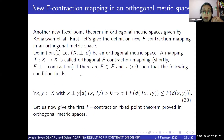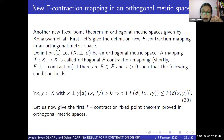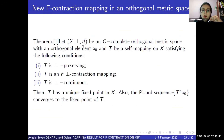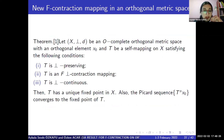Another new fixed-point theorem in orthogonal metric space is given by Konaklan et al. First, let's give the definition of the new F-contraction mapping in an orthogonal metric space. Let (X⊥, d) be an orthogonal metric space. A mapping T: X → X is called an orthogonal F-contraction mapping if there are F in ℱ and τ > 0 such that the following condition holds as in condition 30. Let (X⊥, d) be an O-complete orthogonal metric space with orthogonal element X₀ and T be a self-mapping on X satisfying conditions 1, 2, 3. Then T has a unique fixed point in X. Also, the Picard sequence converges to the fixed point of T.